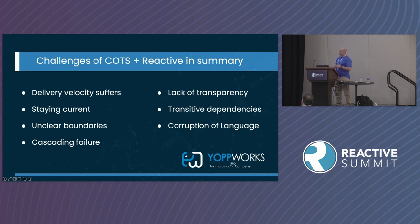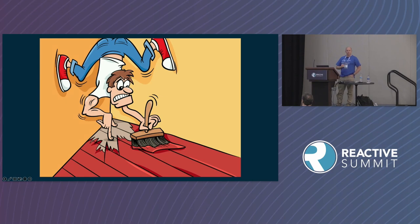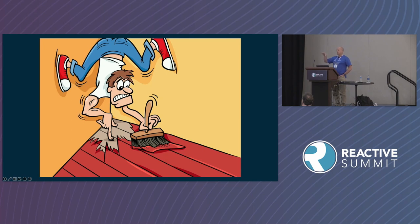To add a couple more to the list: transitive dependencies — systems include different libraries, maybe different versions of the same library — and when you get into operations those things really start to conflict with one another, things crash, cascading failures. Corruption of language we talked about. So why do we do it? Why do we paint ourselves into these corners? It's pretty simple: we want to buy a commodity rather than to maintain something that's already readily available. We want to rely on the experts rather than ourselves. This e-commerce platform has thousands of customers deployed all across the world — we want to borrow that expertise.